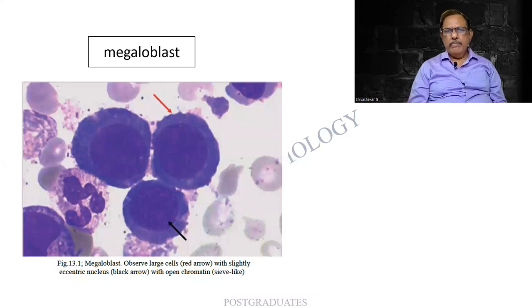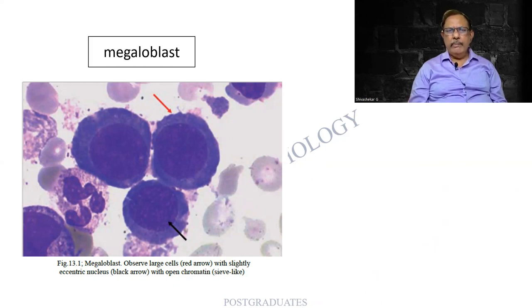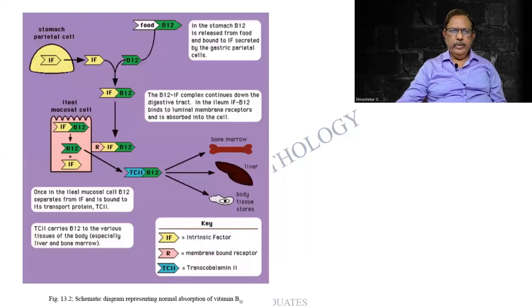We have completed iron deficiency — the causes etc. you should see in your text. Now I am going to the megaloblast. What is of great importance is describing the megaloblast: it is a large cell with a large nucleus with an opened-out, sieve-like chromatin. The nuclear maturation lags behind the cytoplasmic maturation. The survival is short in the bone marrow, and therefore the patient develops anemia.